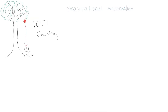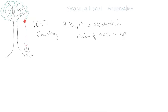Gravity is 9.8 meters per second squared. It's acceleration — the speed at which things fall back to Earth. Earth is the center of mass, and gravity and mass are twinned. The Earth is so large compared to us that we are under the effect of gravity according to the Earth.